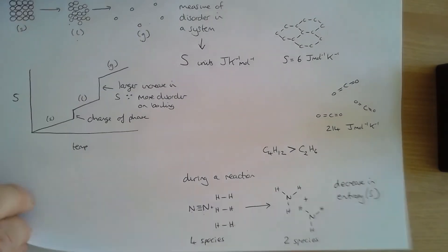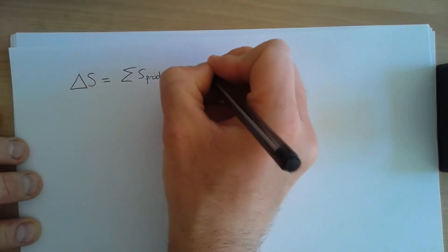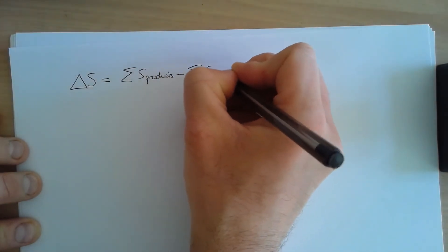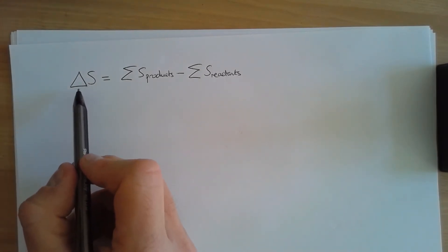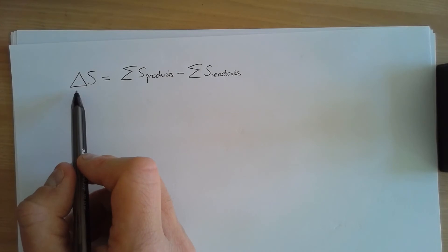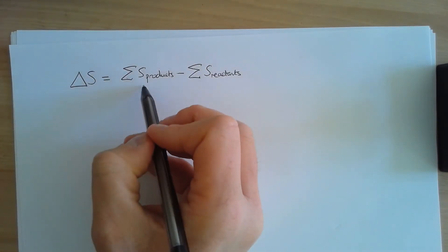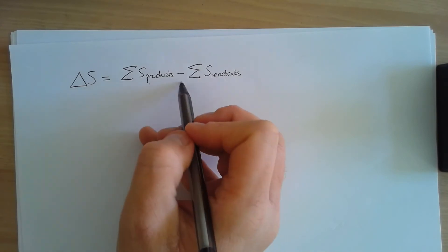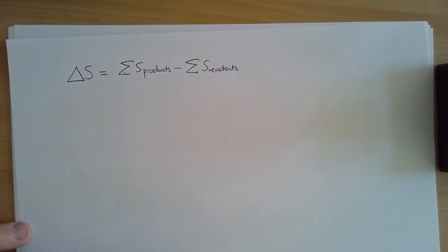To review: a gas has greater disorder and therefore greater entropy than a liquid than a solid; very ordered substances like graphite with strong bonds and a regular lattice have very low entropies; substances with larger molecular mass have greater disorder; and the number of species in a reaction indicates whether entropy increases or decreases. Now let's look at some example calculations. The equation we need is: delta S, the change in entropy, equals the sum of the entropy of the products minus the sum of the entropy of the reactants.